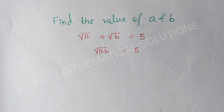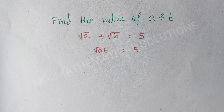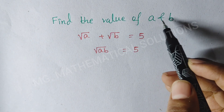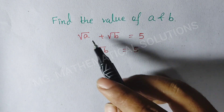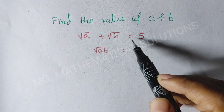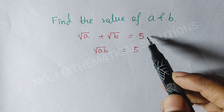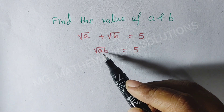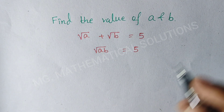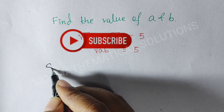Hello students, welcome to solve a nice math olympiad algebra problem, which is: find the value of a and b given the equation root a plus root b equal to 5, and root ab equal to 5. Let's see the solution.